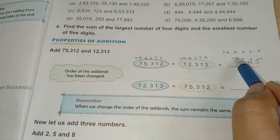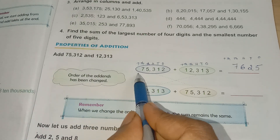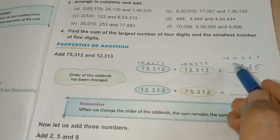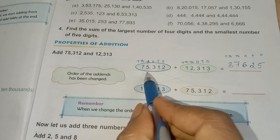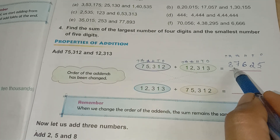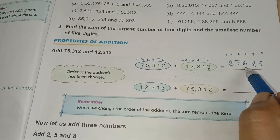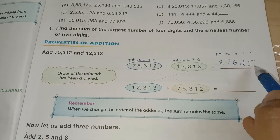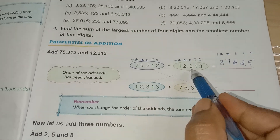In the thousands place, five and two are there. Five plus two is seven. I will write seven in the thousands place. Then seven plus one is eight. The answer of these two numbers is 87,625.